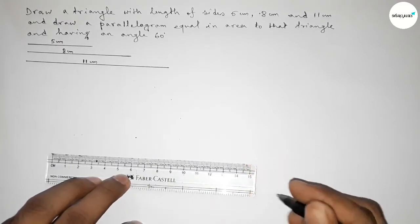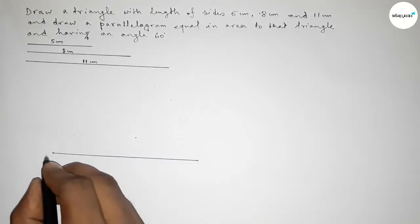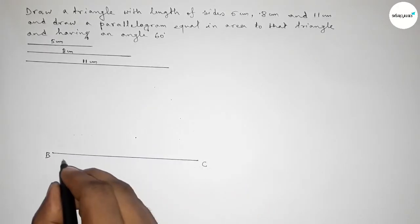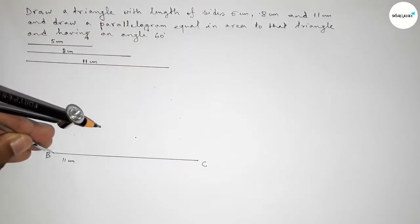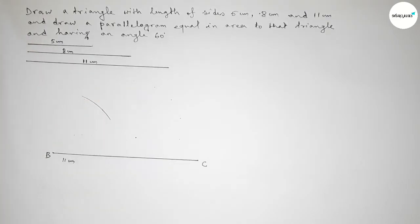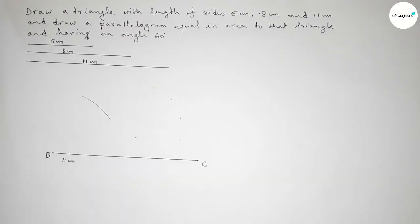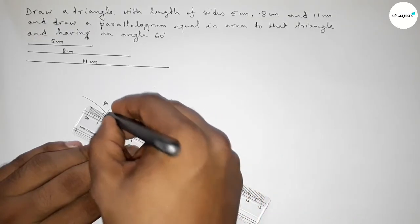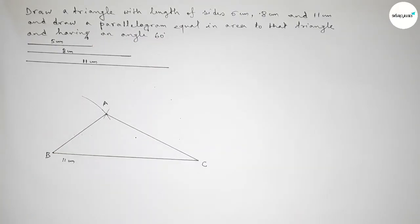First, we draw a line of length 11 centimeter — taking point B on one end and point C on the other. Next, we take 5 centimeter length using the compass and place it on point B, drawing an arc. Then we take 8 centimeter length using the compass, place it on point C, and cut an arc. Both curves intersect at a point — we take that as point A. We then join A to C and A to B, forming triangle ABC.